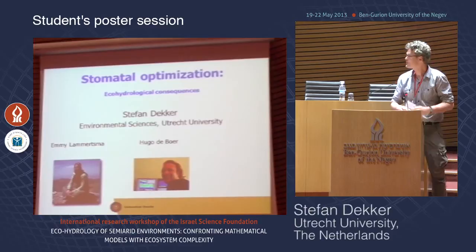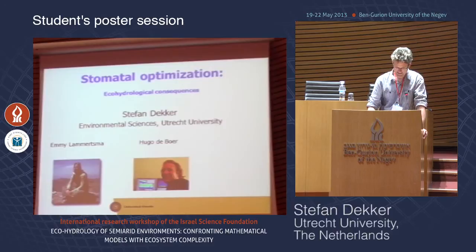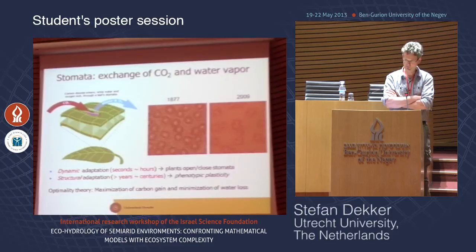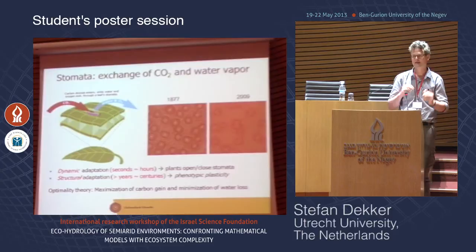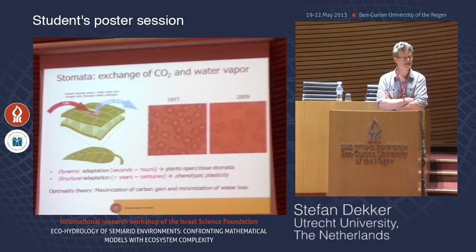I'd like to thank my former PhD students, Emile Lamertsmijn and Hugo de Boer, who did most of the work on stomatal optimization. We know that stomata are extremely important in the carbon and water cycle — they take up CO2 and lose water. They have dynamic adaptation within seconds or minutes, but they can also structurally adapt to changes such as CO2 change. The question is: can they change within years to decades, and how far within the so-called phenotypic plasticity?